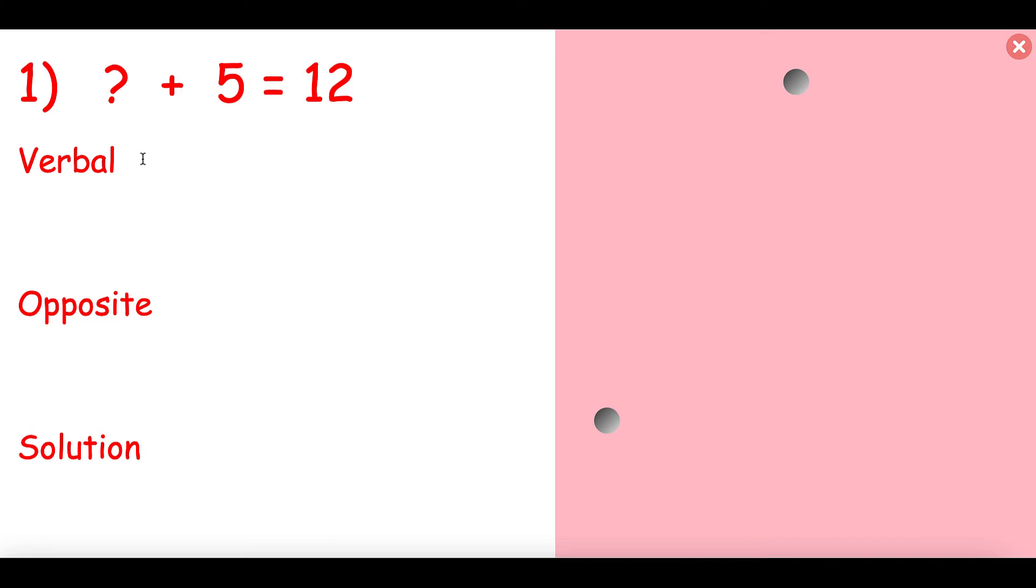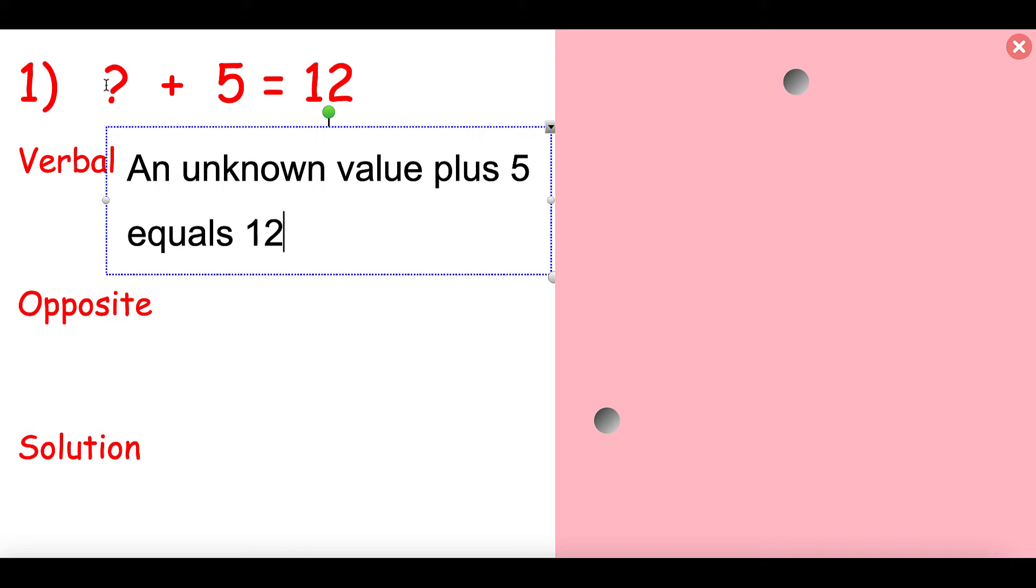We're going to rewrite this verbally. I know it's a little strange to think about this sometimes, writing things verbally, but I want to talk about what this actually means. So what is this saying? This is saying an unknown value. I don't know what that value is. This is an unknown value plus five equals twelve. That's what it means. Something plus five equals twelve. Now, I know some of you are shouting out the answer, but just relax. We're going to get to it. This is kind of easy section today, and that's fine.